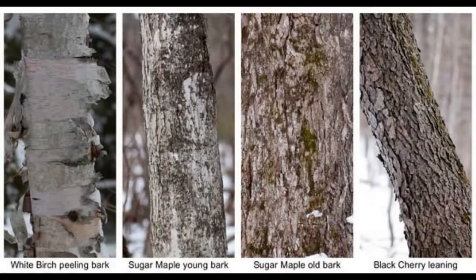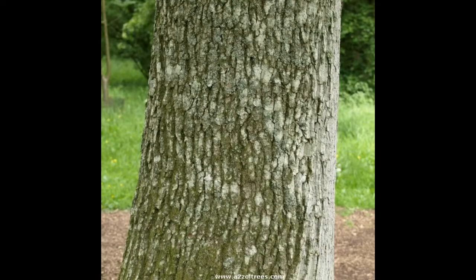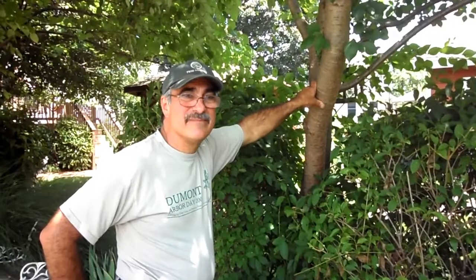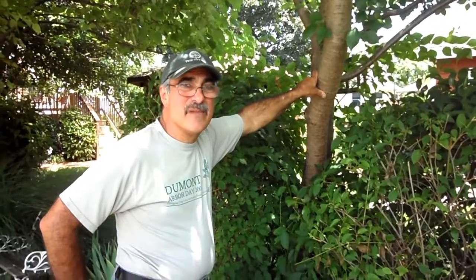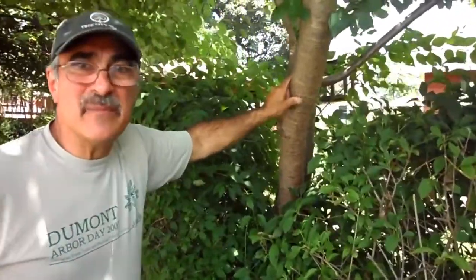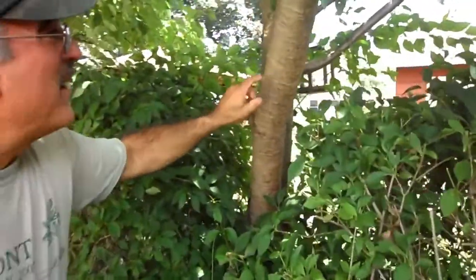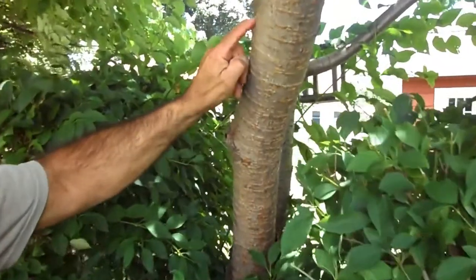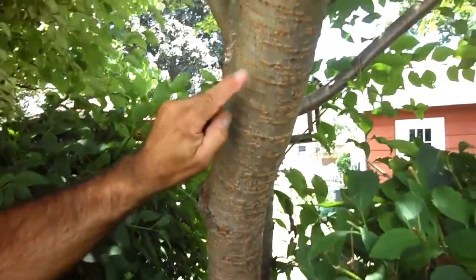Though it's easier to identify a tree by its leaves, you can also identify them from the color, texture, and smell of the bark. You can usually identify the trees in the cherry family by the horizontal lines around the circumference of the bark.